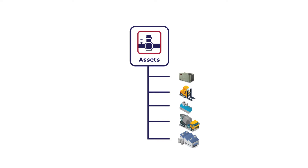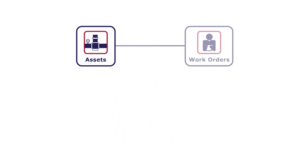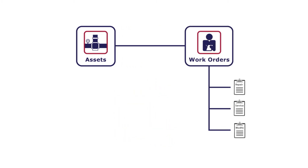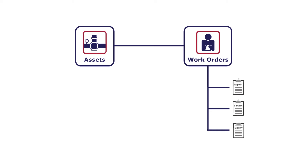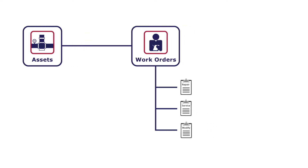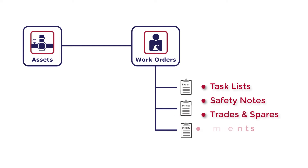Once I've defined the assets in my asset register, I can then start to generate work orders. A work order is the most basic document of a maintenance system. It represents the various maintenance tasks that I need to perform on my assets. Information that I can add to this work order includes task lists, safety notes, trades, spare parts, documents and more.